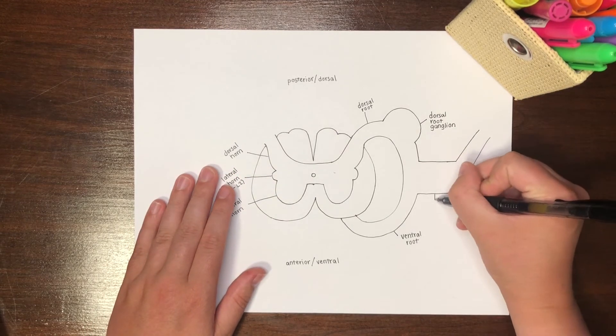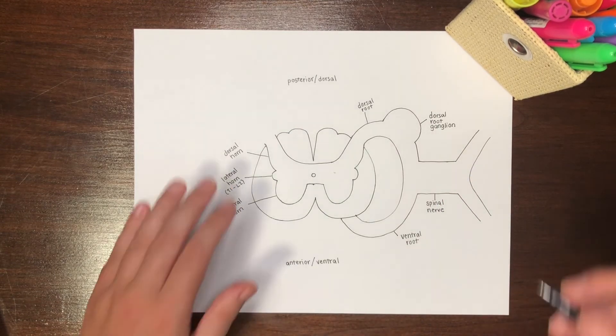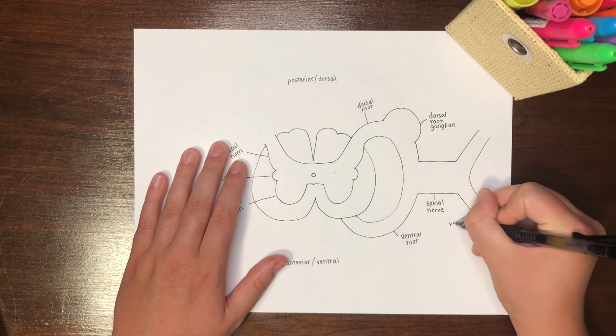These two nerves converge into a singular spinal nerve. This spinal nerve will then branch into dorsal and ventral rami, respectively.